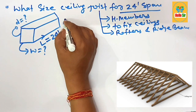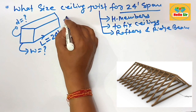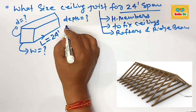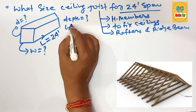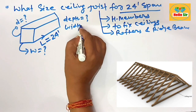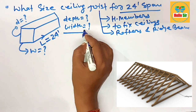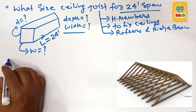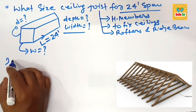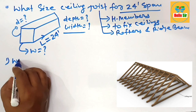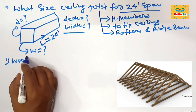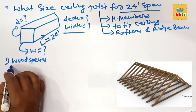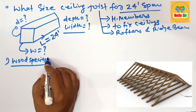The size of ceiling joist means you have to determine the depth of the joist and the width section of the joist. The size of ceiling joist depends on many factors, like the wood species — there are different kinds of wood species used as dimensional lumber in roof framing.